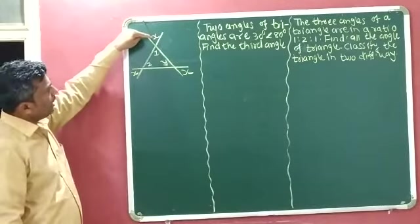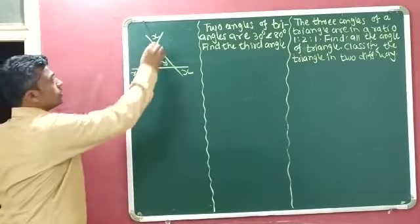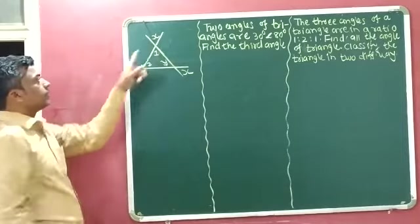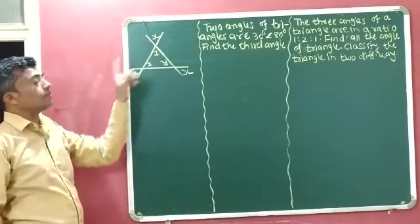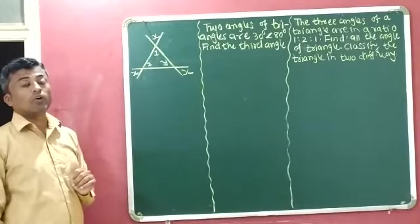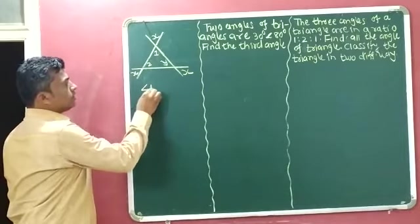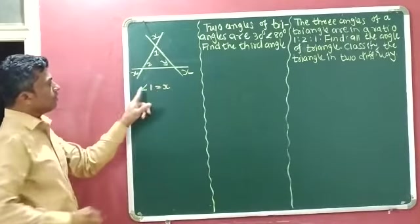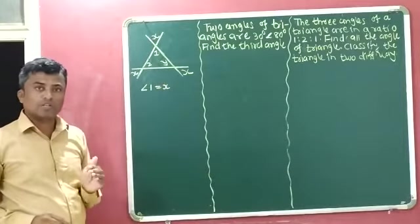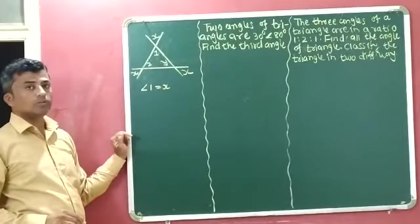Now see here, x and angle 1 are both vertically opposite angles, because these two lines intersect at one point. We know that vertically opposite angles are equal, so angle 1 is equal to x.